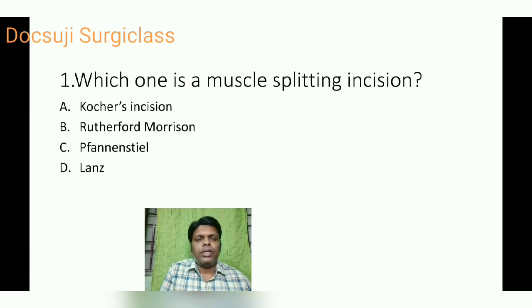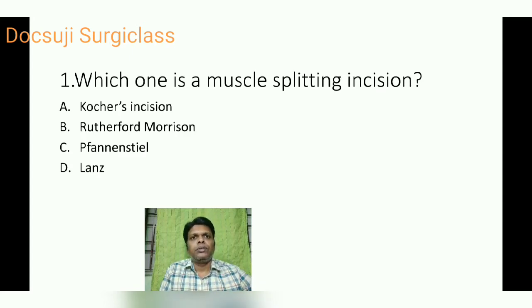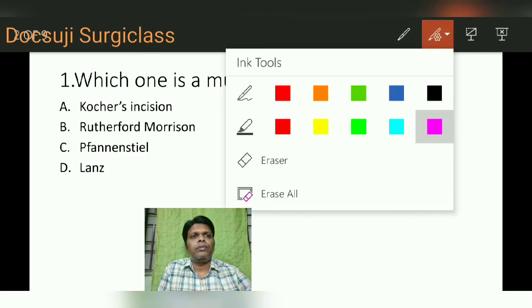The first question: which one is a muscle splitting incision? Option A: Cocker's incision. Option B: Rutherford Morrison incision. Option C: Fenn and Steele incision. Option D: Layens incision. We will discuss one by one.